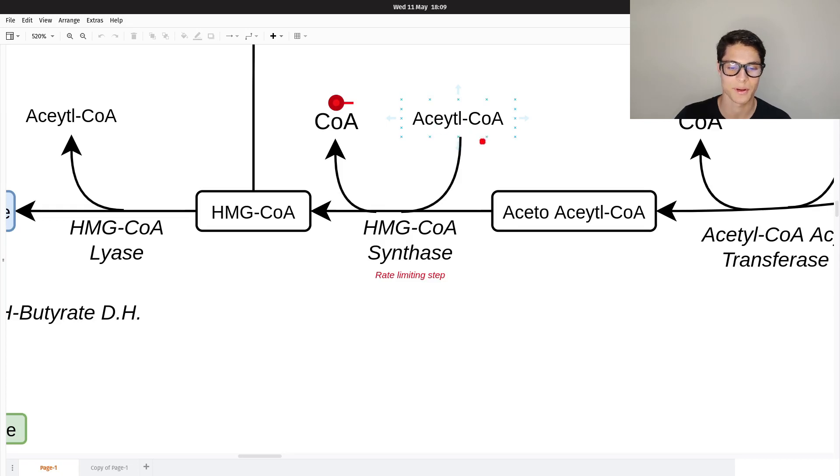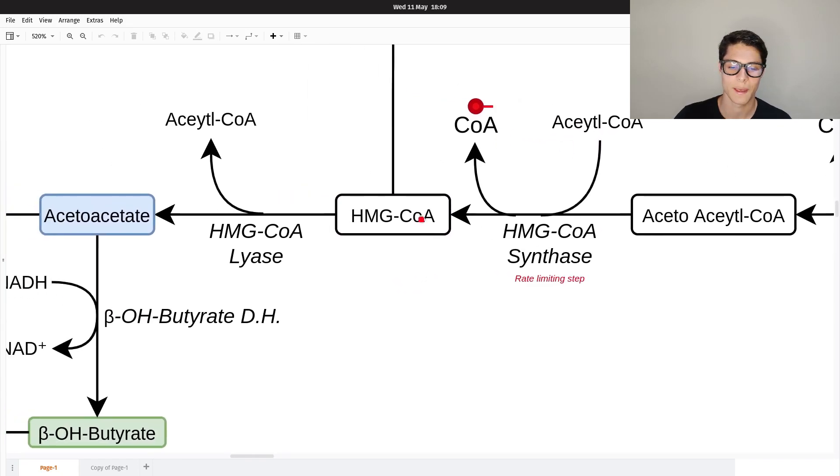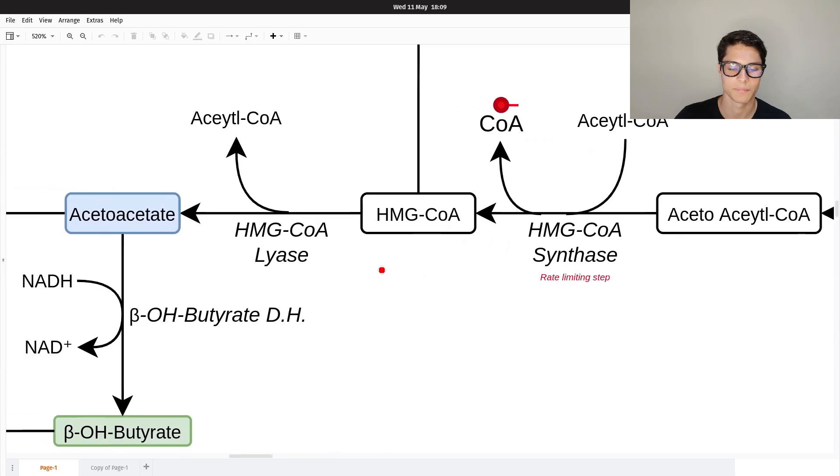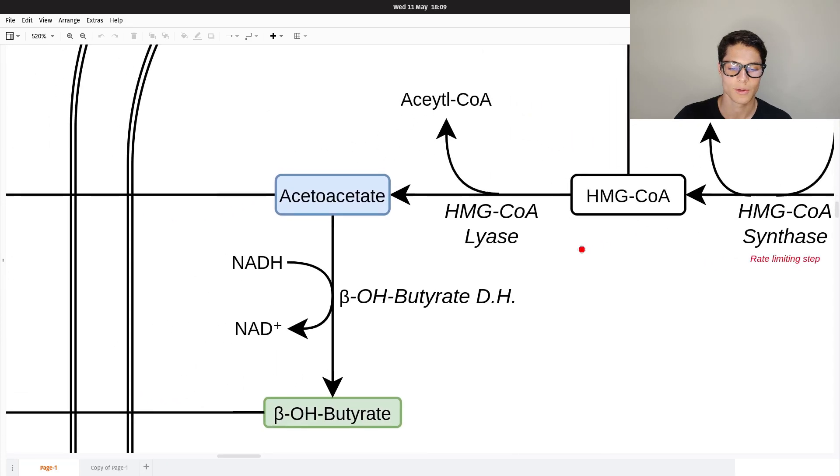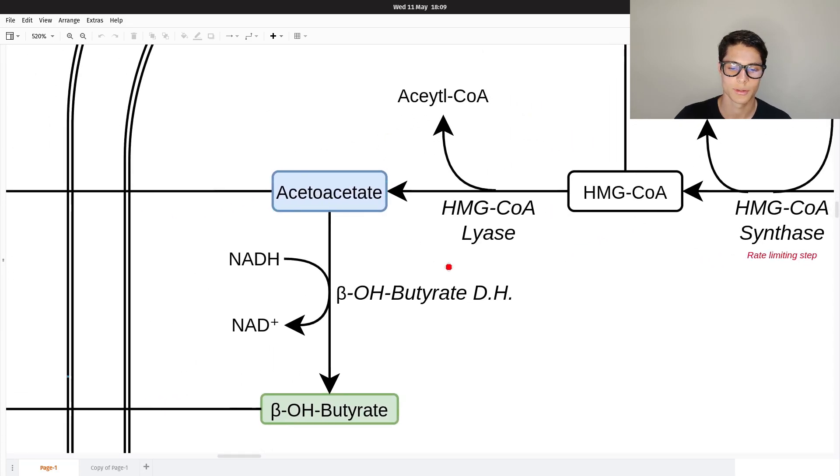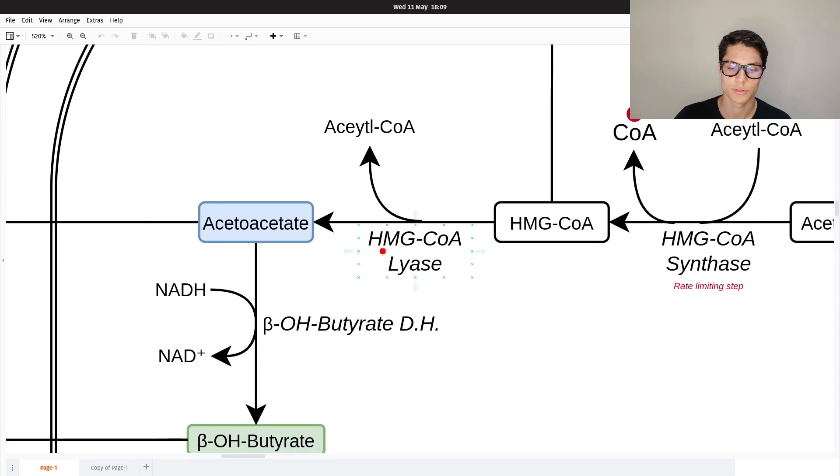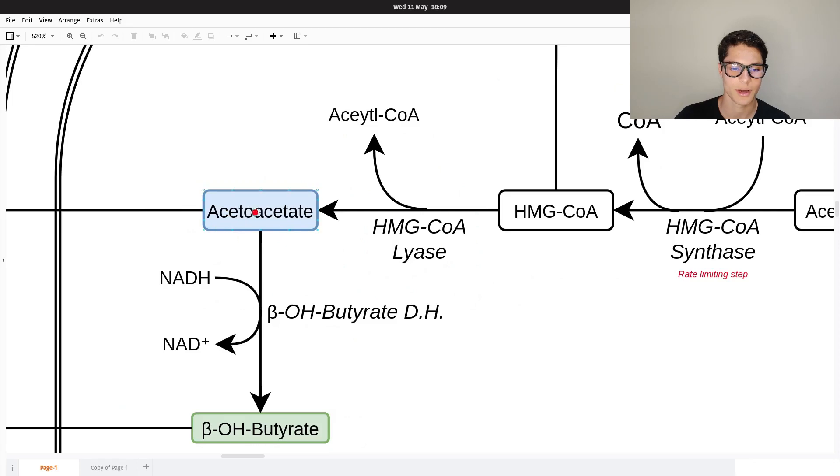This happens because we have so much acetyl-CoA. So HMG-CoA is created, then we continue to the ketone metabolism. We're going to use the HMG-CoA lyase which is going to get rid of an acetyl-CoA. So then acetoacetate is created.